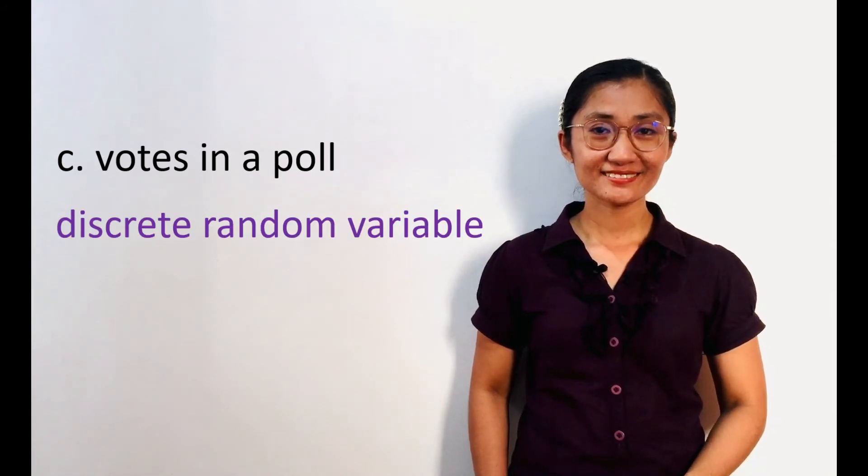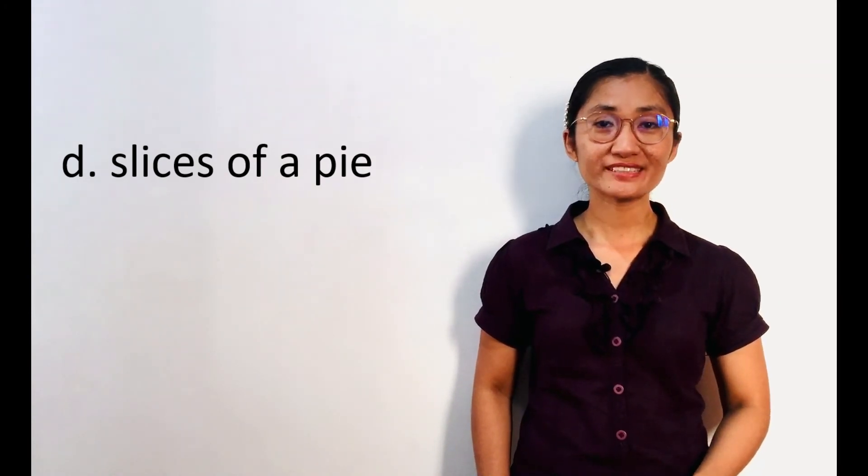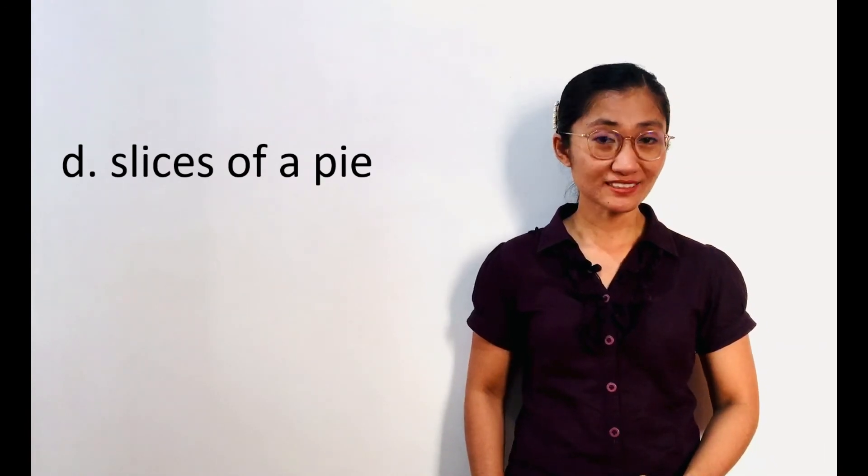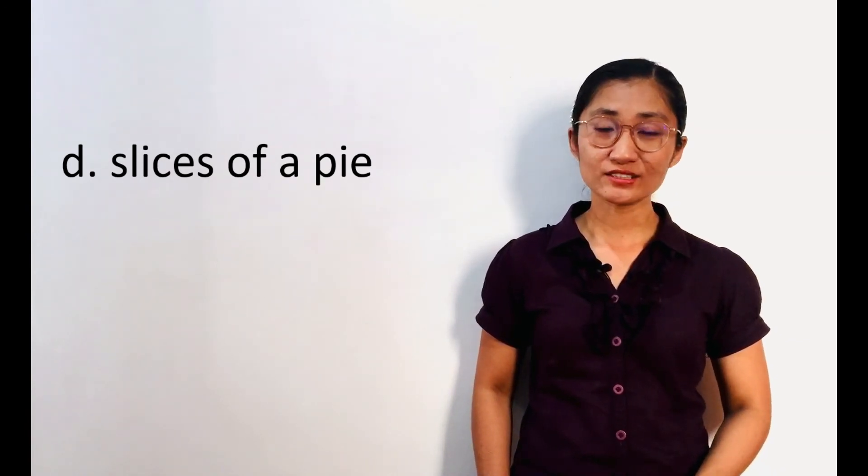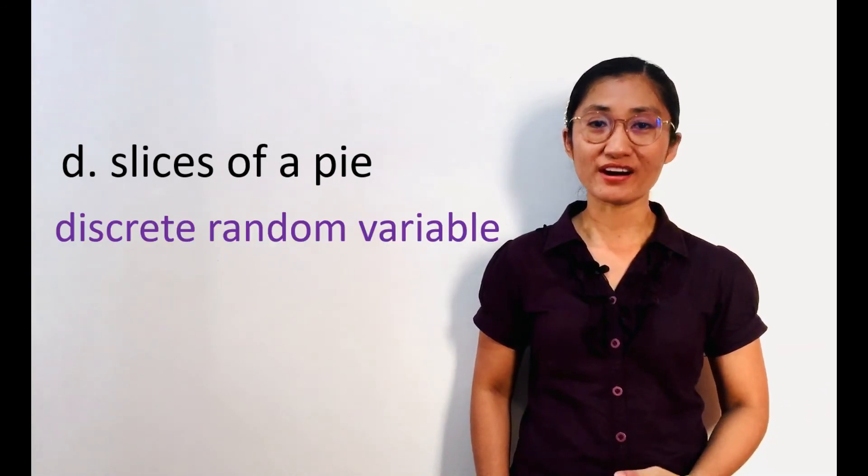Next, slices of a pie. Discrete or continuous? Since the number of slices can only be positive whole numbers, regardless of the sizes of pieces, then this is a discrete random variable.